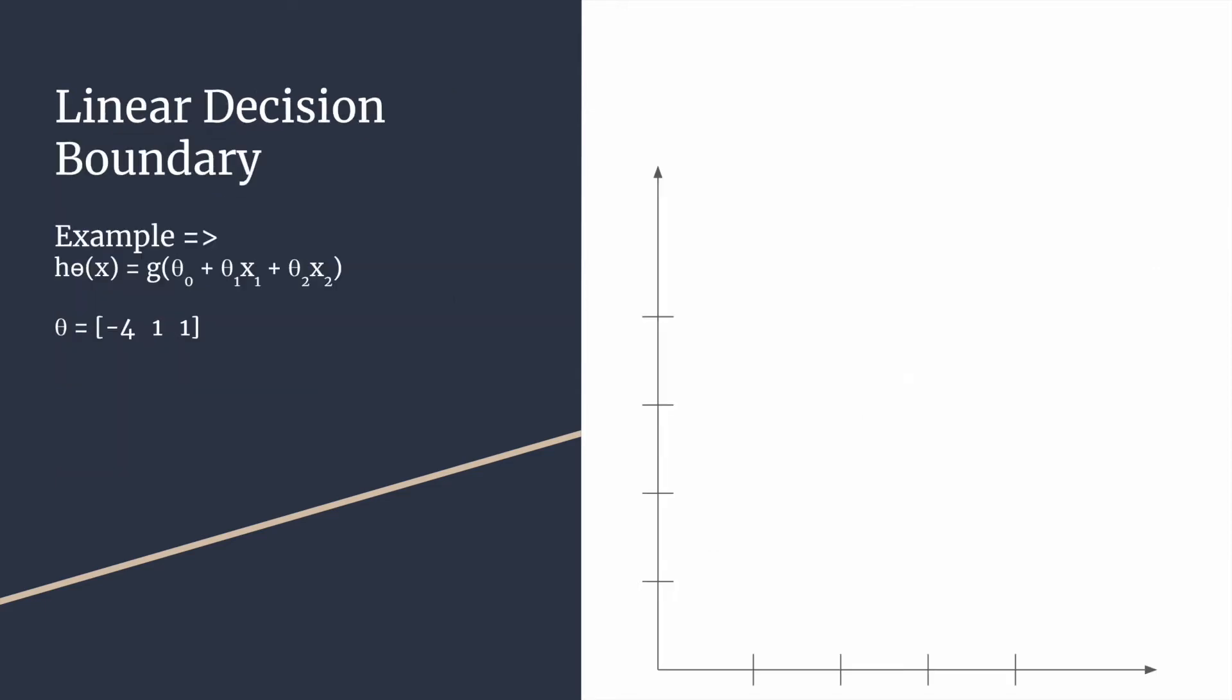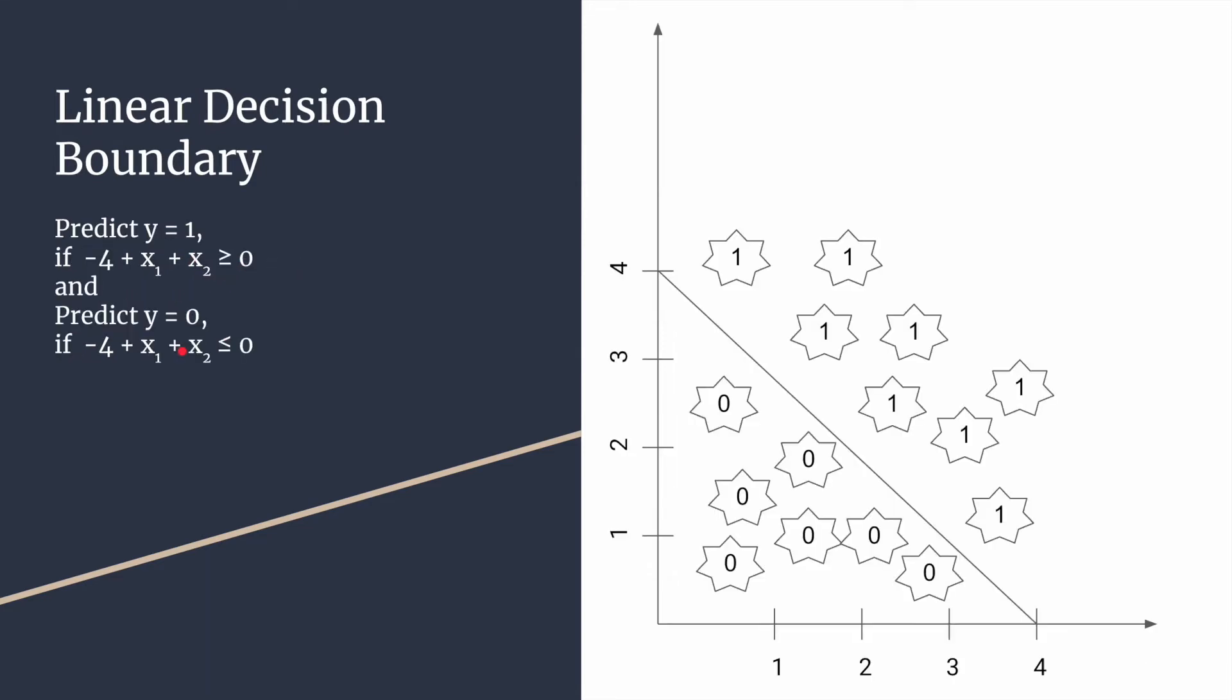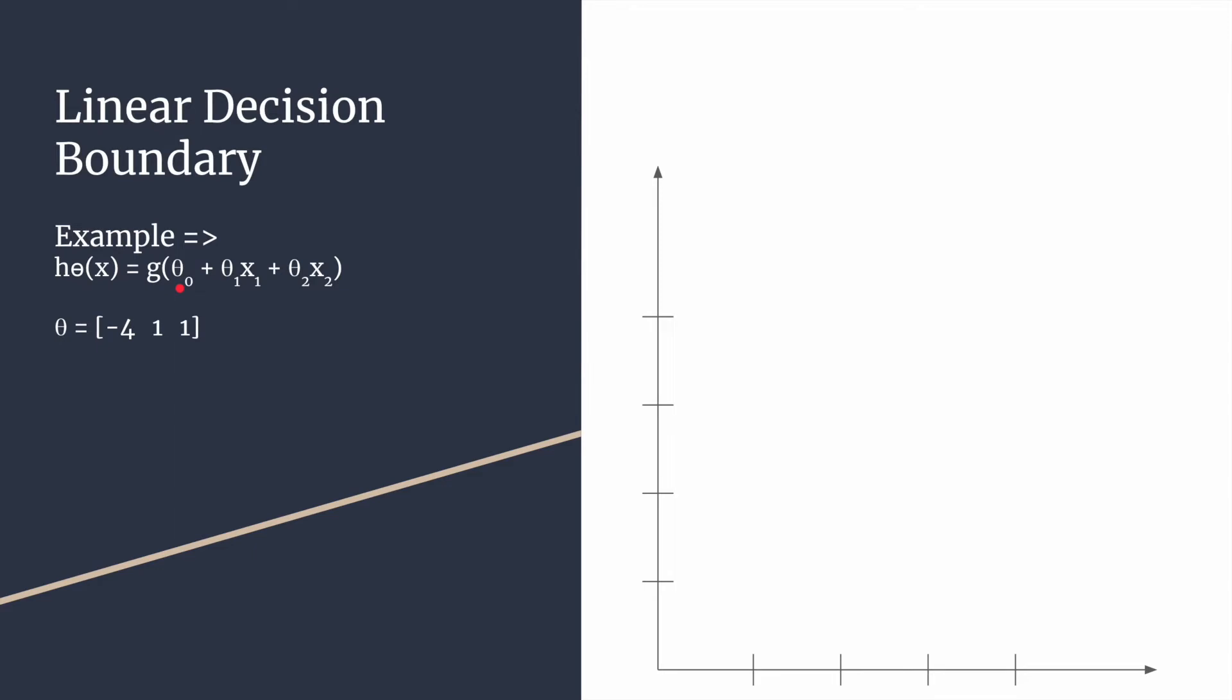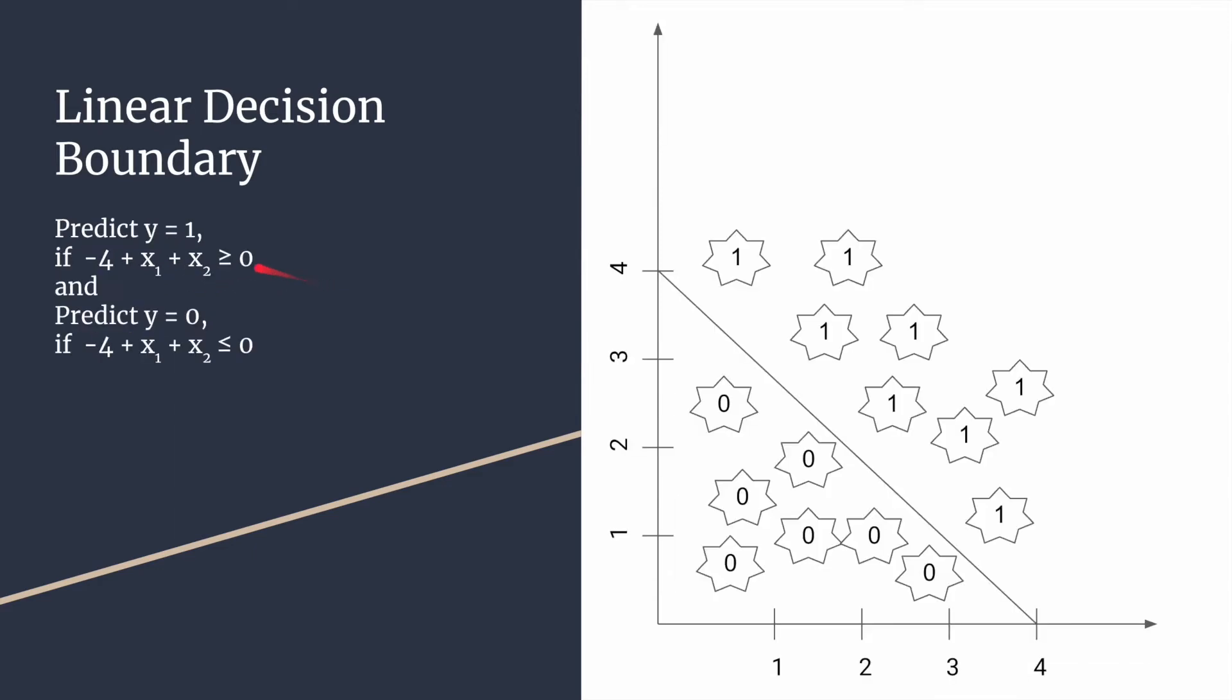Let's take an example of first a linear decision boundary. It will be just a line to represent here. When we take the examples of theta equals minus 4, 1 and 1, theta 0 will be equals to minus 4, theta 1 will be equals to 1, theta 2 will also be equals to 1. It will predict y equals 1 whenever the inside thing, that is theta 0 plus theta 1 x1 plus theta 2 x2, will be greater than or equal to 0. When we put the values of theta there, we get minus 4 plus x1 plus x2 greater than or equal to 0. This will predict y equals 1 when it is greater than or equal to 0, and this will predict y equals 0 when this is less than or equal to 0.